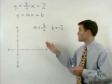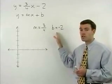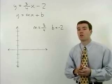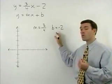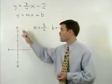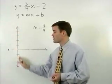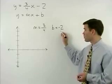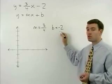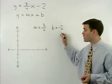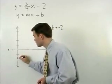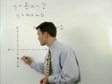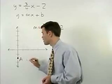To graph a line using its slope and y-intercept we always start with its y-intercept. Remember the y-intercept of a line is the point where the line crosses the y-axis and since our y-intercept is negative 2 we start by plotting the point that is down 2 units on the y-axis and we call that point A.